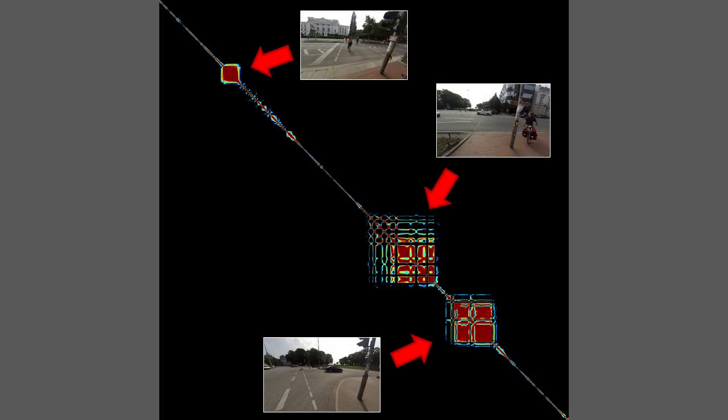Redundant frames appear as blocks along the diagonal of the graph. We detect these and remove the corresponding frames, which results in a cleaner match graph.